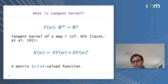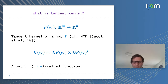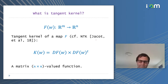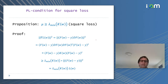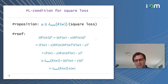You can view the tangent kernel as a matrix-valued function, since for every W you have this tangent kernel defined. Here is a simple proposition you can prove in about five or six lines: the minimum eigenvalue of the tangent kernel controls the PL constant mu — the number in the PL condition.